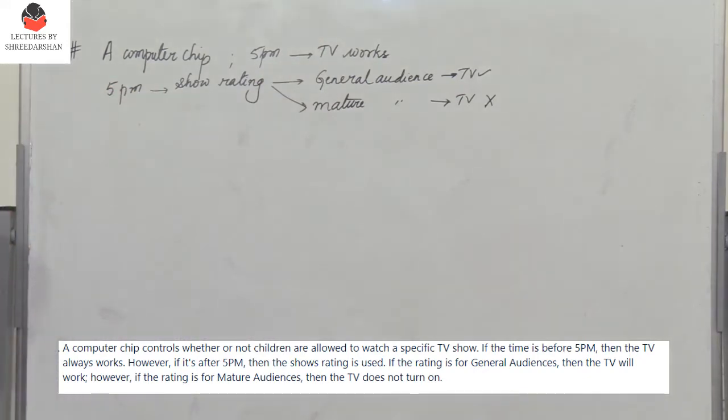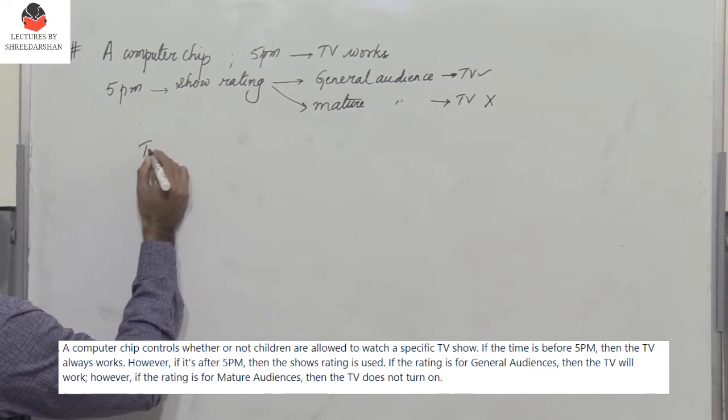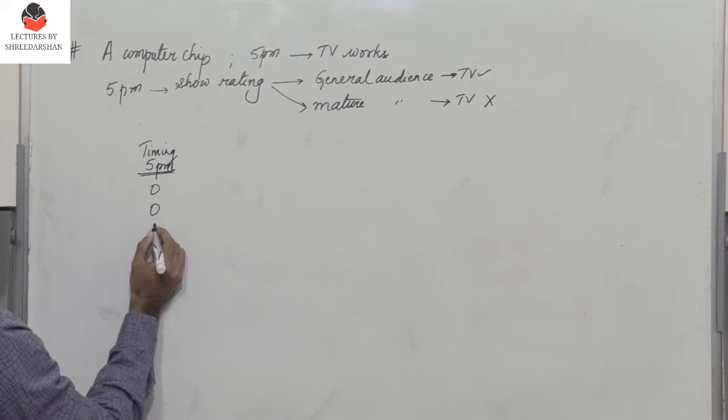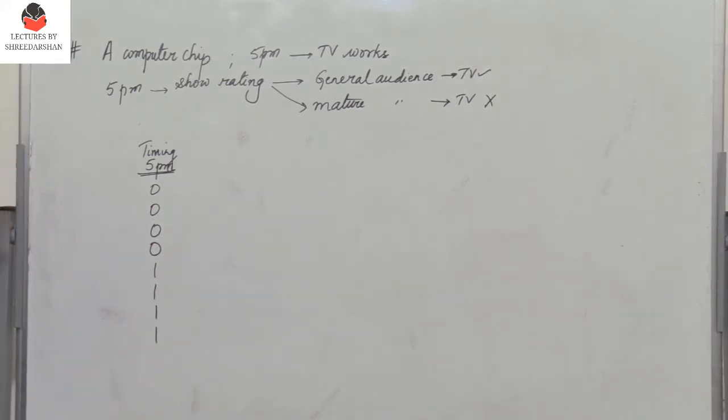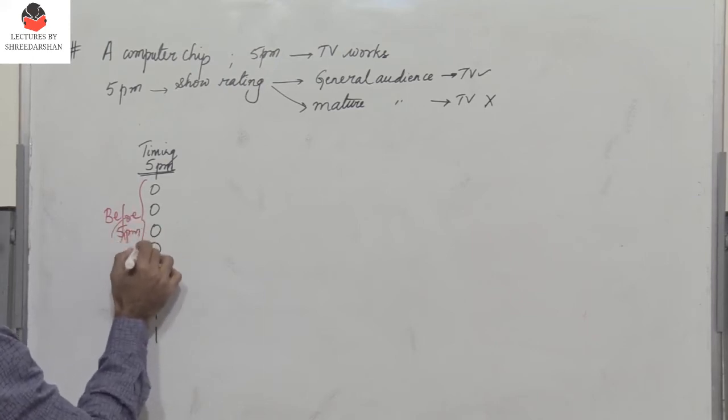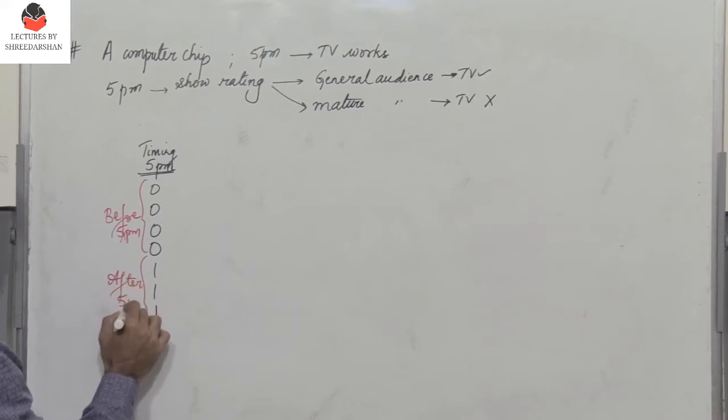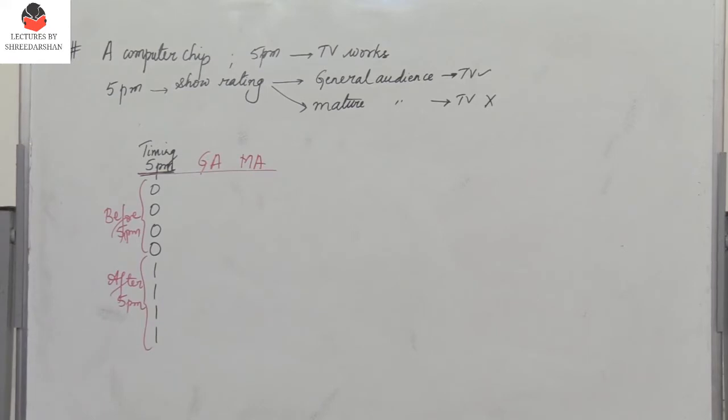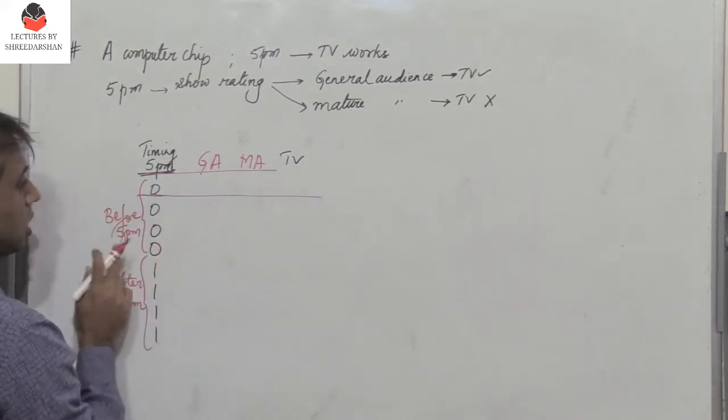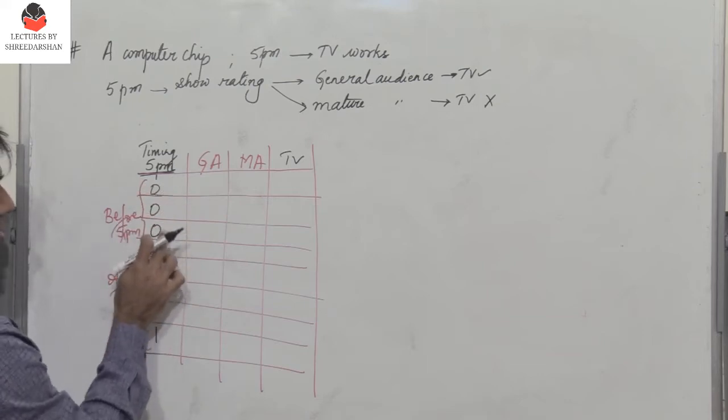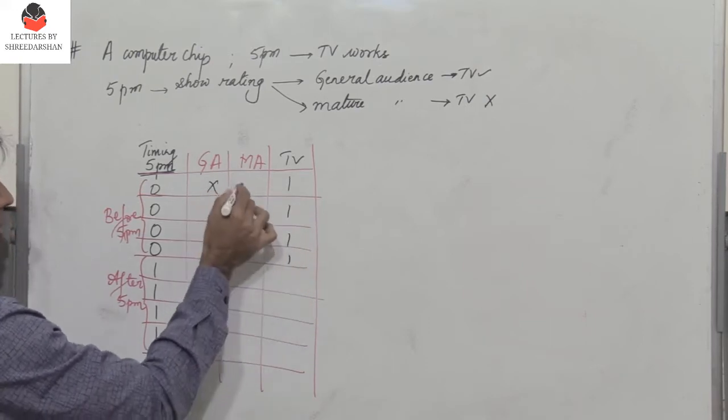Let's consider three cases here. We have the timing where the criteria happens to be 5 p.m. Before 5 p.m. is indicated by zero and after 5 p.m. is indicated by one. So this is before five and you have the case where it is after 5 p.m. Then we have shows for general audience and for mature audience, and the output is whether the TV is on or off. When you have TV shows before 5 p.m., the TV is always on. So if the value is zero, the TV is always on. We're not worried about these two conditions because it's always for the general audience.